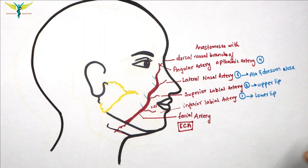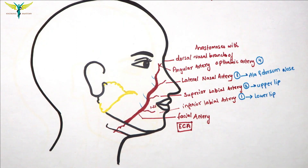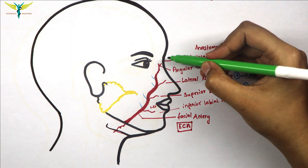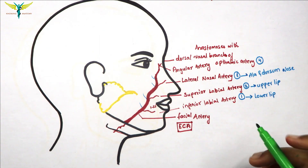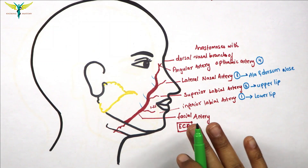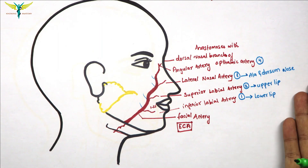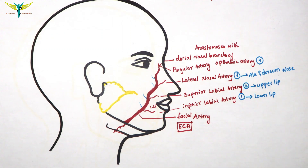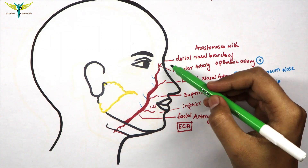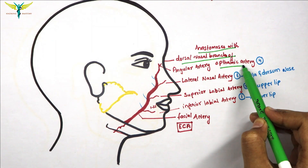A few important points to remember: the facial artery forms many anastomoses, mainly in the midline of the face with the opposite arteries. The inferior labial artery anastomoses with the inferior labial artery of the other side, the superior labial artery with the superior labial artery of the other side, and the lateral nasal artery with the lateral nasal artery of the other side. At the medial angle of the eye, it anastomoses with the dorsal nasal branch of the ophthalmic artery.